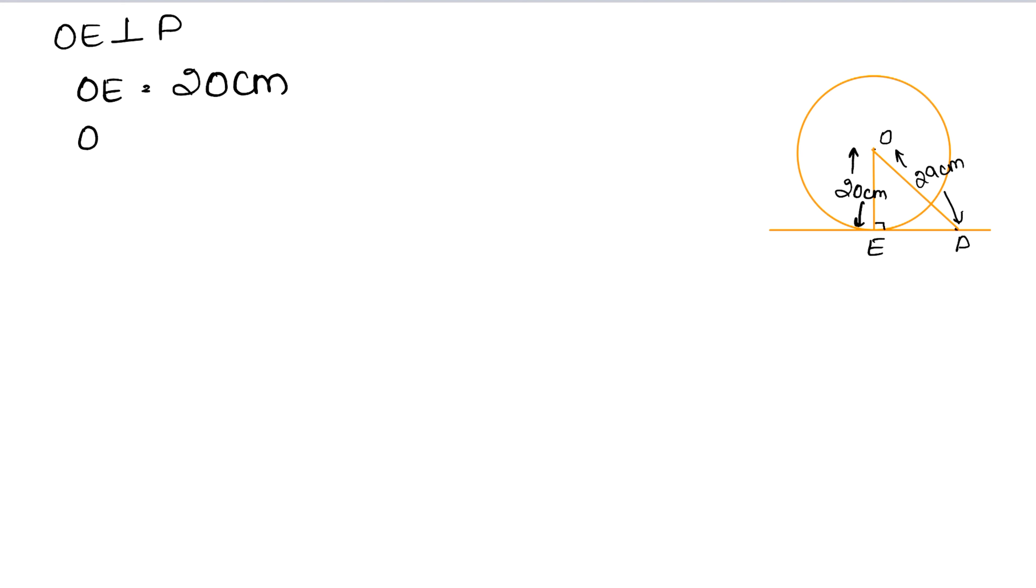Now, OP is 29 cm. Triangle OEP is a right angle triangle because OE is perpendicular to P.